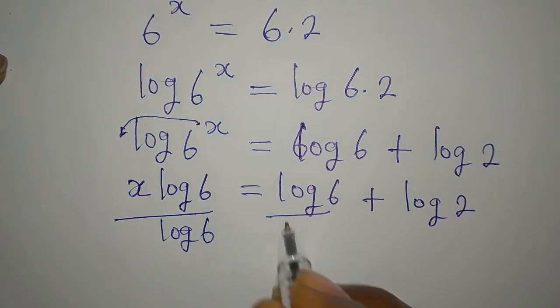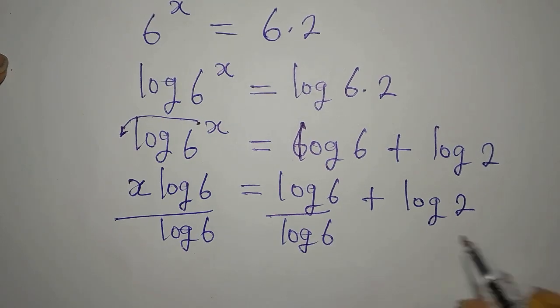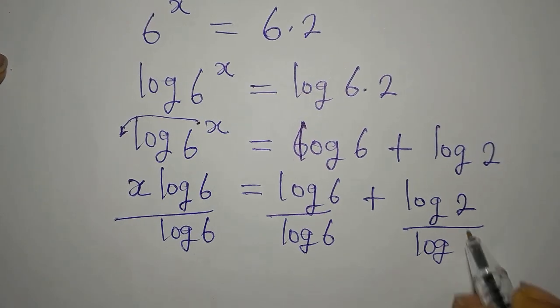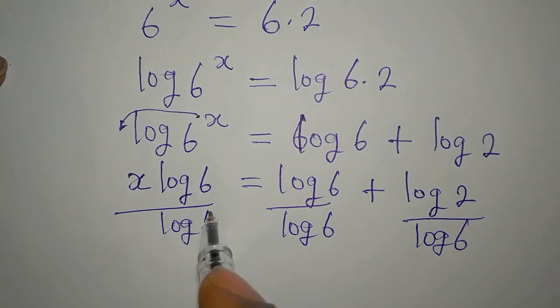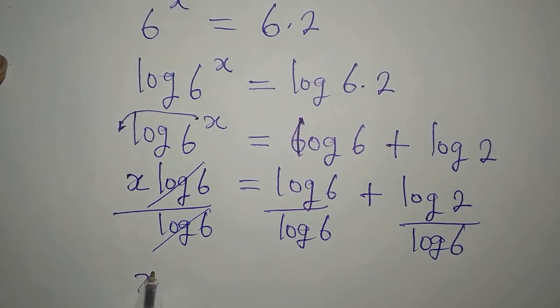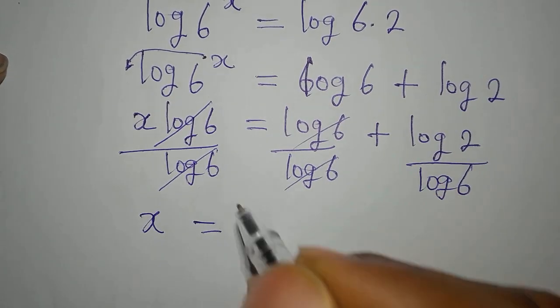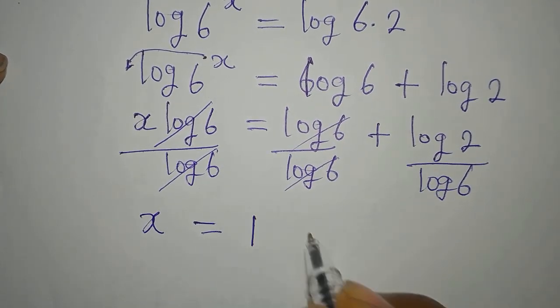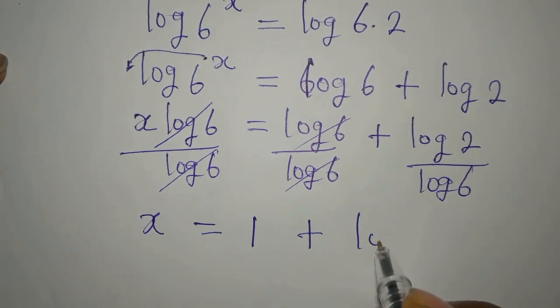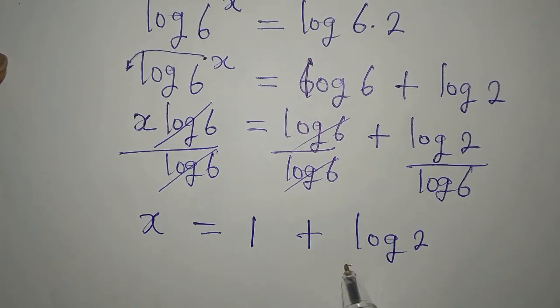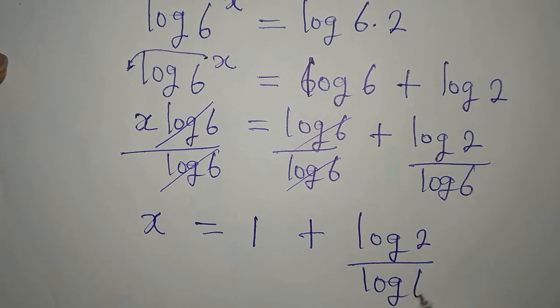Since I'm looking for the value of x, I will divide all through by log 6. X is alone and it's equal to 1, then plus we have log 2 divided by log of 6.